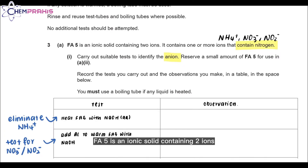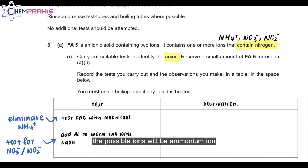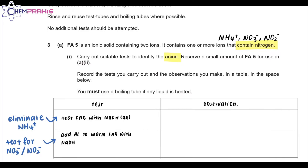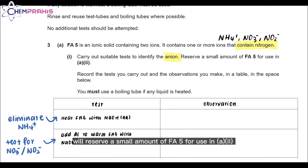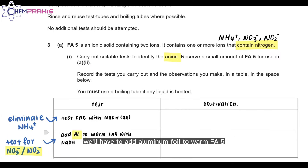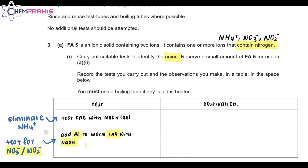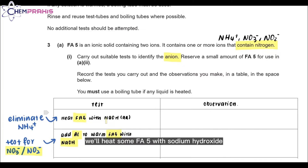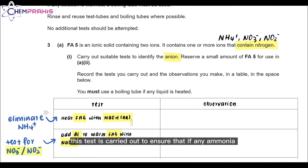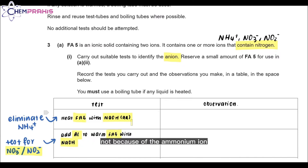We'll be starting with Part A. FA5 is an ionic solid containing two ions. It contains one or more ions that contain nitrogen. The possible ions would be ammonium ion, nitrate ion, and nitrite ion. We'll carry out tests to identify the anion and reserve a small amount of FA5 for use in A2. The test for nitrate or nitrite ions requires adding aluminum foil to warm FA5 and sodium hydroxide. However, before adding the aluminum foil, we'll heat some FA5 with sodium hydroxide and test for ammonia gas. This is to ensure that any ammonia gas in the second test is due to nitrate or nitrite ions, not the ammonium ion.